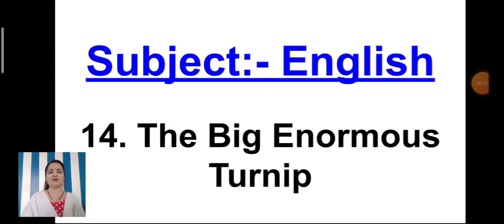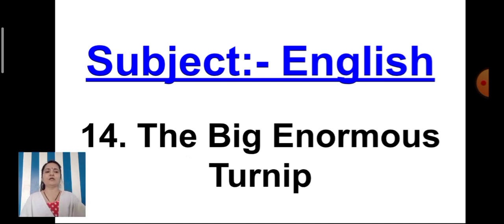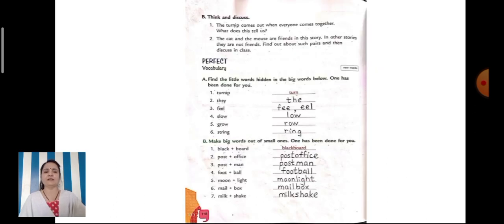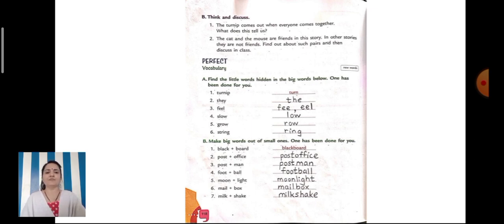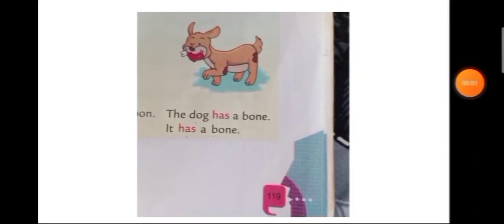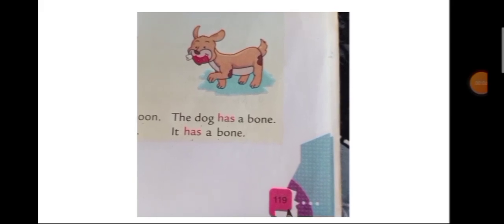Hello children, how are you all? In the last session we have done the textbook work of lesson number 14, The Big Enormous Turnip, up to page number 118. Now today let us do the remaining textbook work of this lesson. So take out your English textbook New Voices, page number 119. Be ready with your eraser and sharpened pencil. Have you opened page number 119?